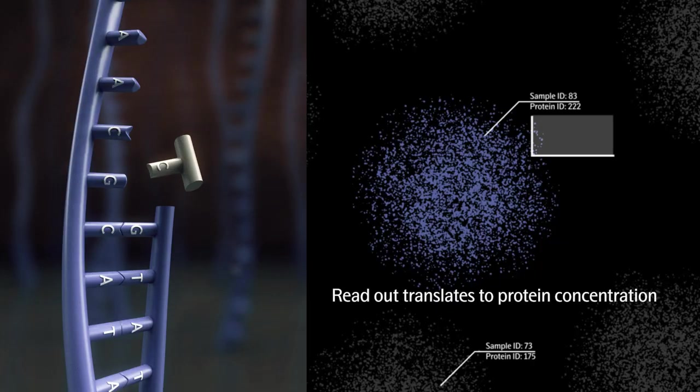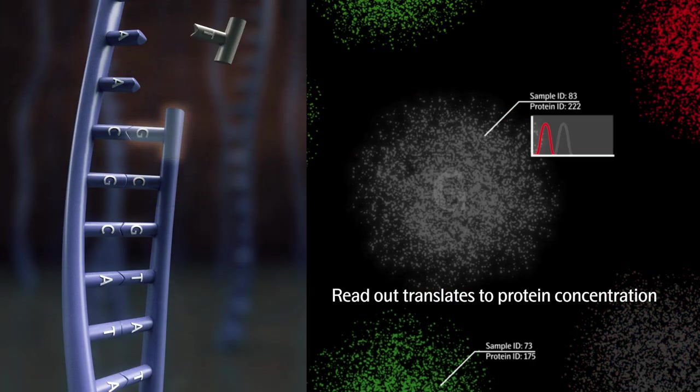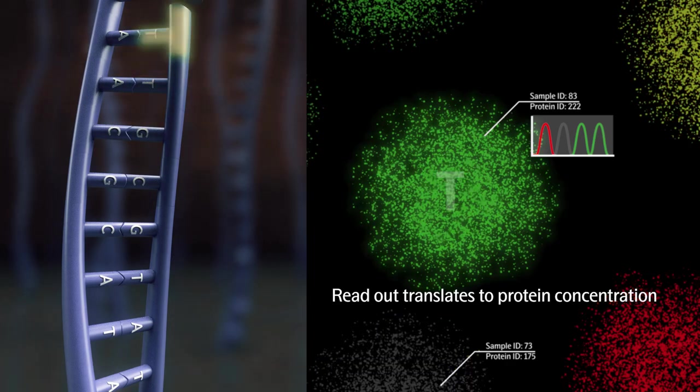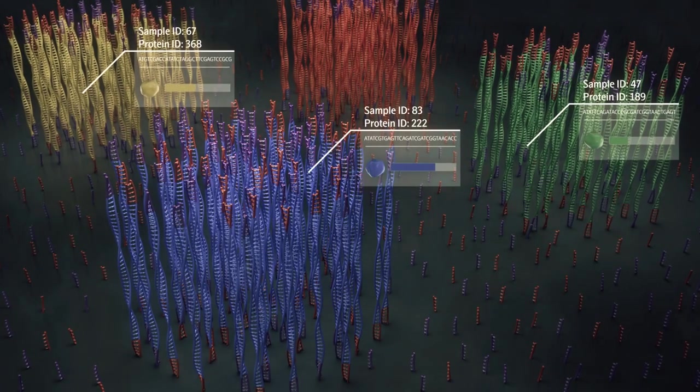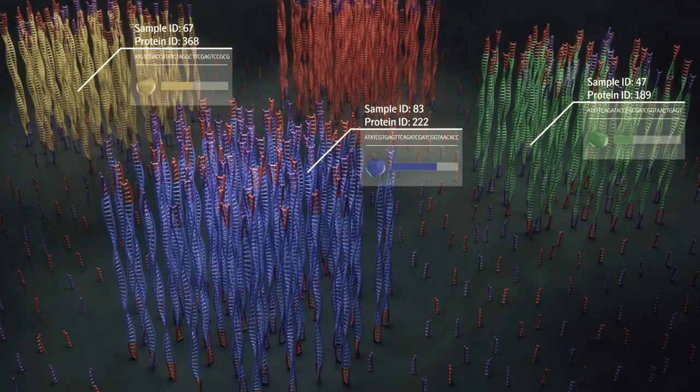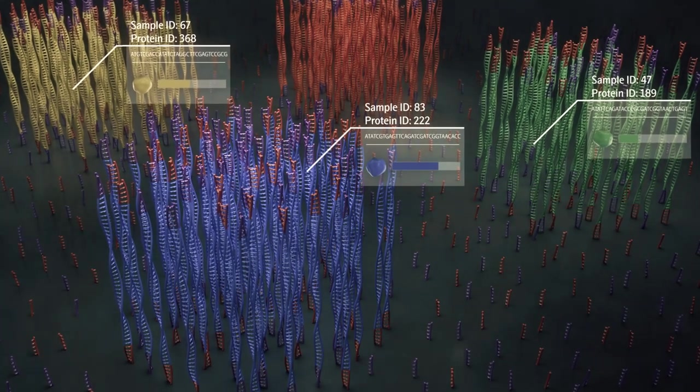During sequencing, the fluorophore for each DNA base is registered to a digital signal. The number of digital signals translates to the concentration of each protein biomarker in each sample.